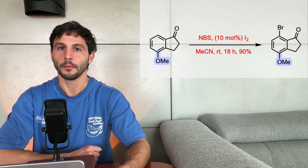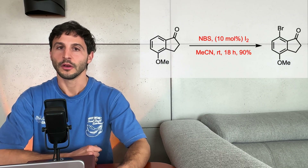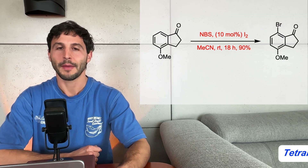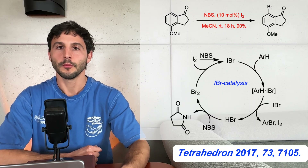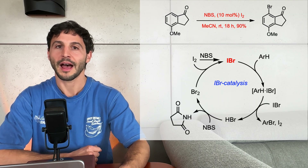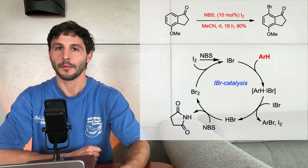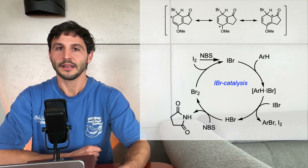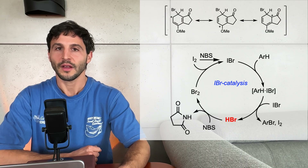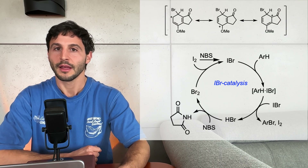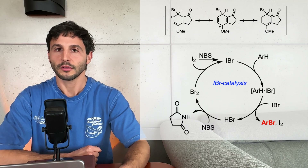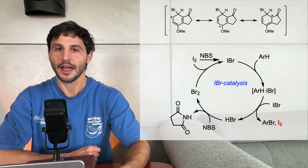A plausible mechanism for this reaction involves the in-situ formation of IBr from iodine and NBS. The actual bromination is then catalyzed by IBr. Electrophilic addition of IBr to the aromatic ring forms a Wheland intermediate, which undergoes hydrogen bromide elimination, assisted by another molecule of IBr, to yield the brominated product, hydrogen bromide, and iodine.